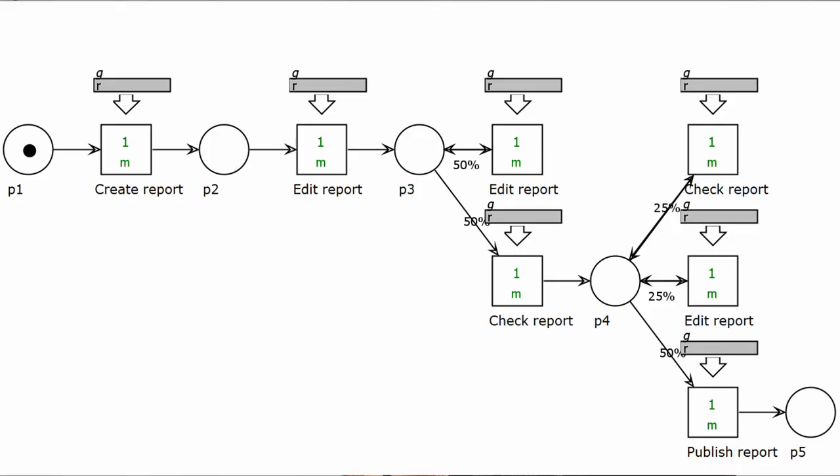It's one of these examples where classic process modeling techniques struggle because they are better suited for processes with a stronger structure. If we try to model this process with a Petri net, we get something like this.